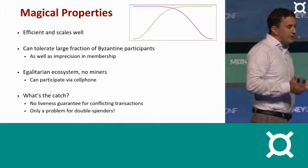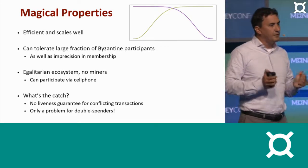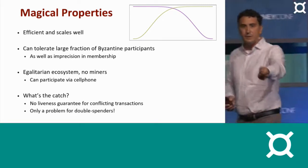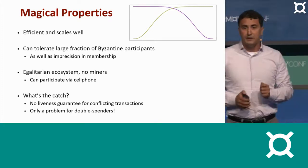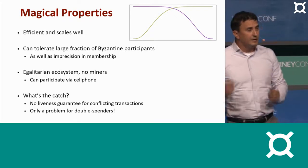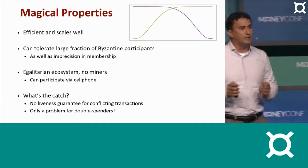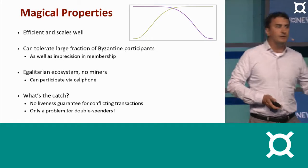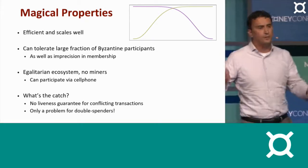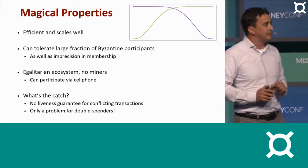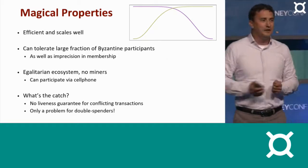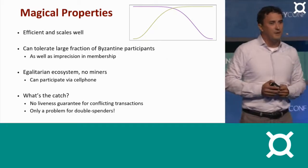The catch is there is no liveness guarantee for conflicting transactions. So if I spend some money to give to you and I spend the same money to give to her, then the system may be unable to decide between these two. Now, classical consensus would have decided. Nakamoto would have decided — he would have picked one or the other. We may not. And it's okay. I tried to defraud the two of you, and I got stuck with my funds in the middle.